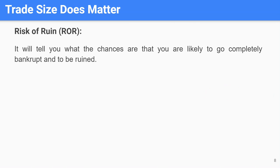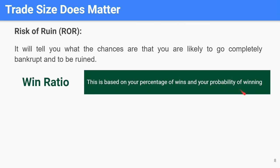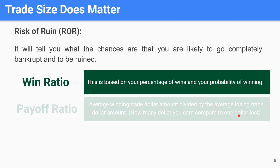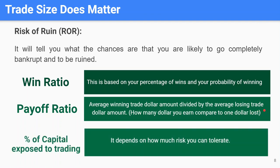The three components are: your win ratio, your payoff ratio — also known as risk-to-reward ratio — and the percentage of capital exposed to trading. The win ratio is based on your percentage of wins and your probability of winning. The payoff ratio shows how many dollars you are earning compared to one dollar you're losing. The last one is the percentage of capital exposed to trading, which depends on how much risk you can tolerate.